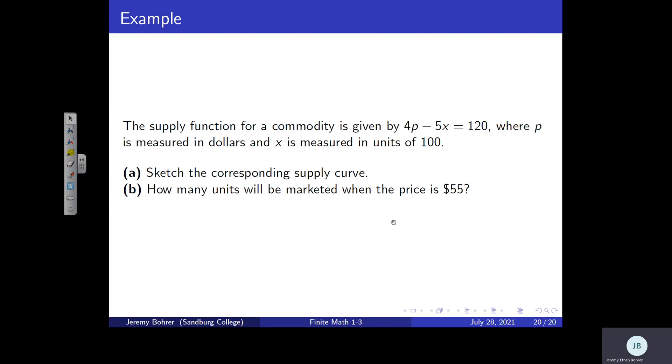All right, in this video we are looking at the example on page 20 of the Chapter 1, Section 3 slides. The supply function for a commodity is given by 4P minus 5X equals 120, where P is measured in dollars and X is measured in units of 100.